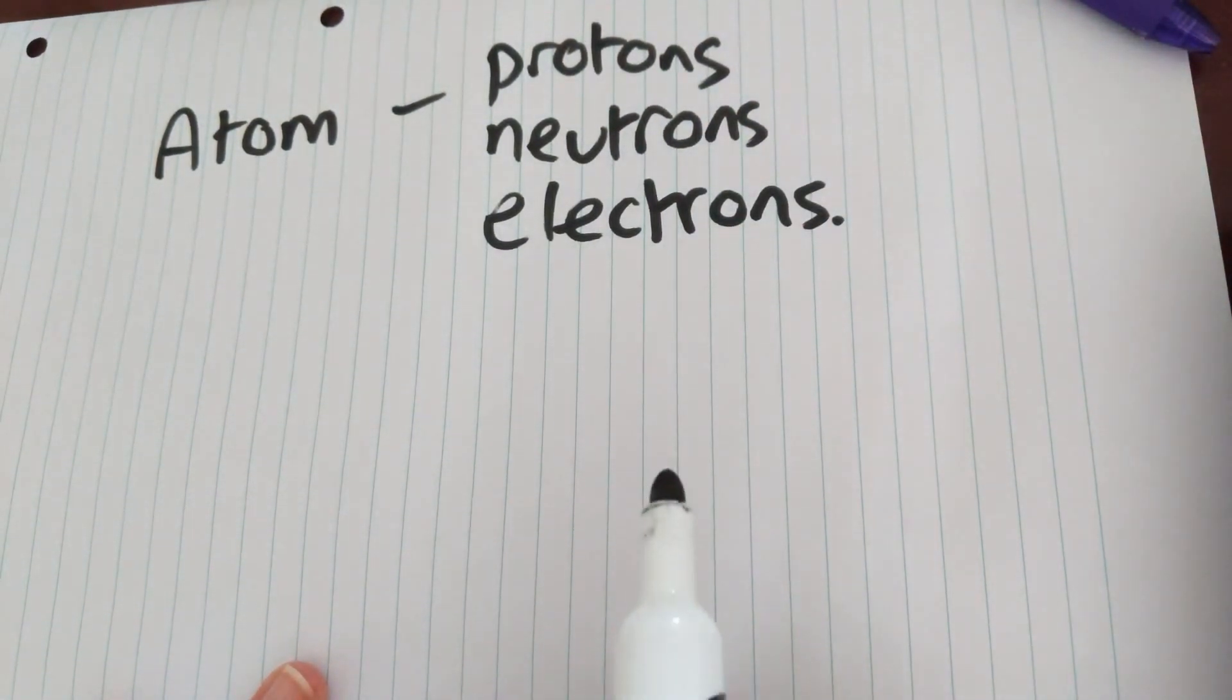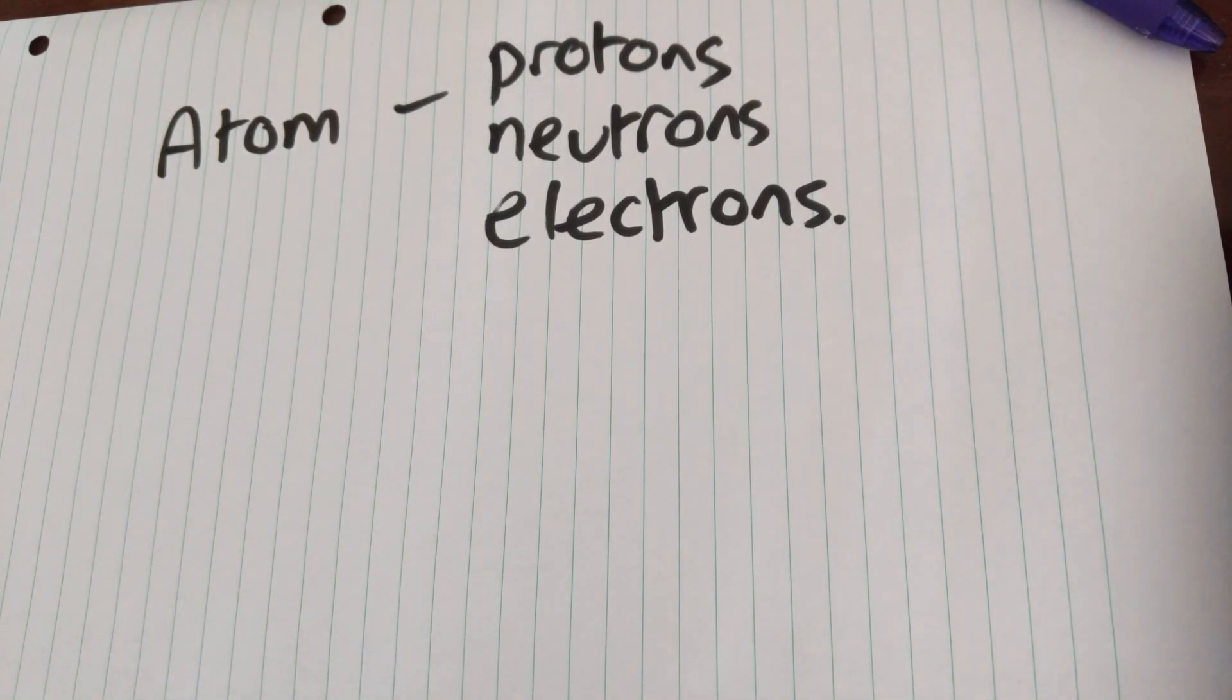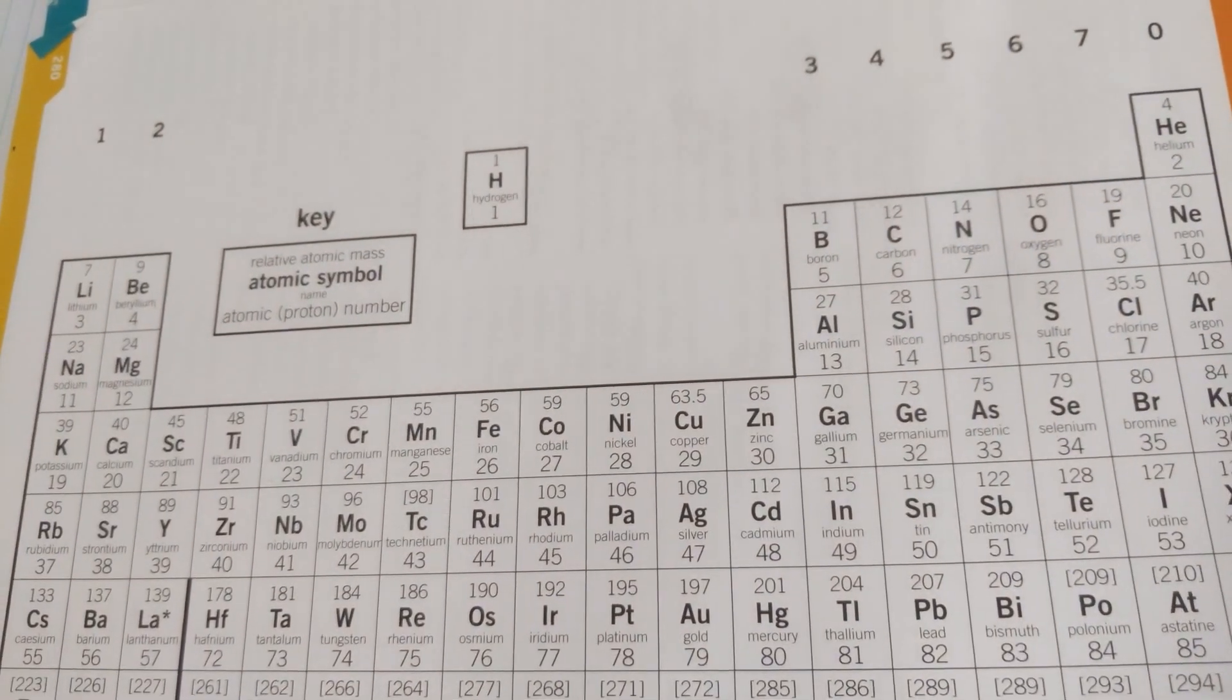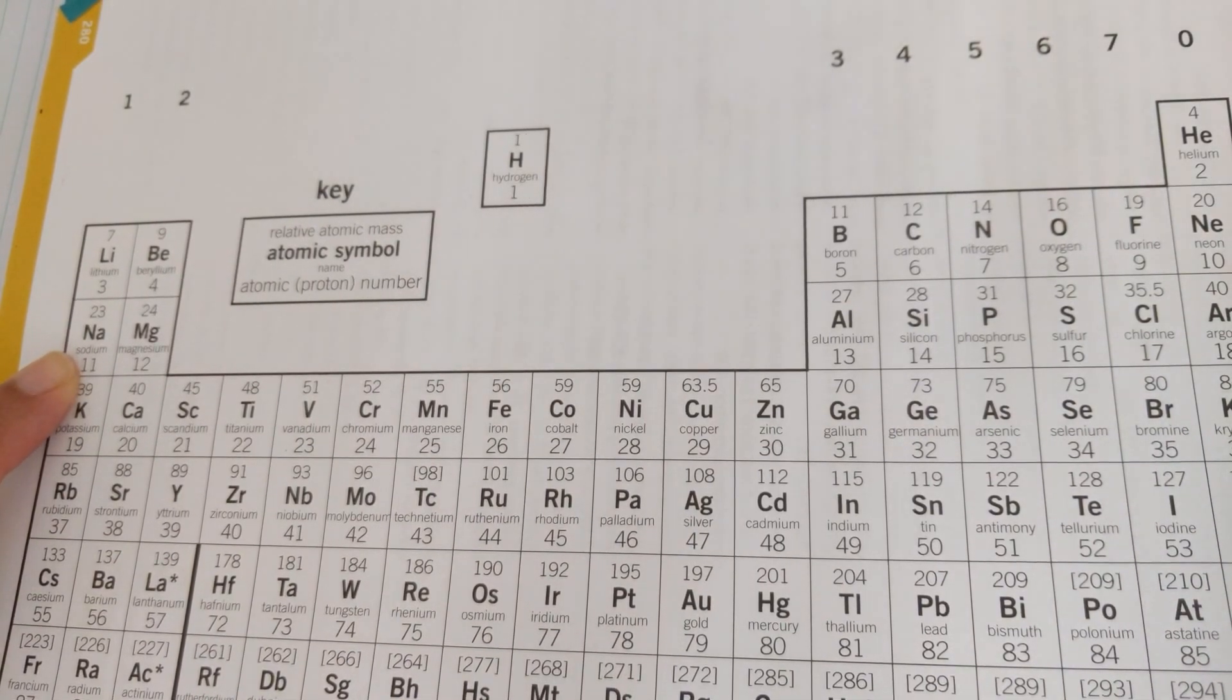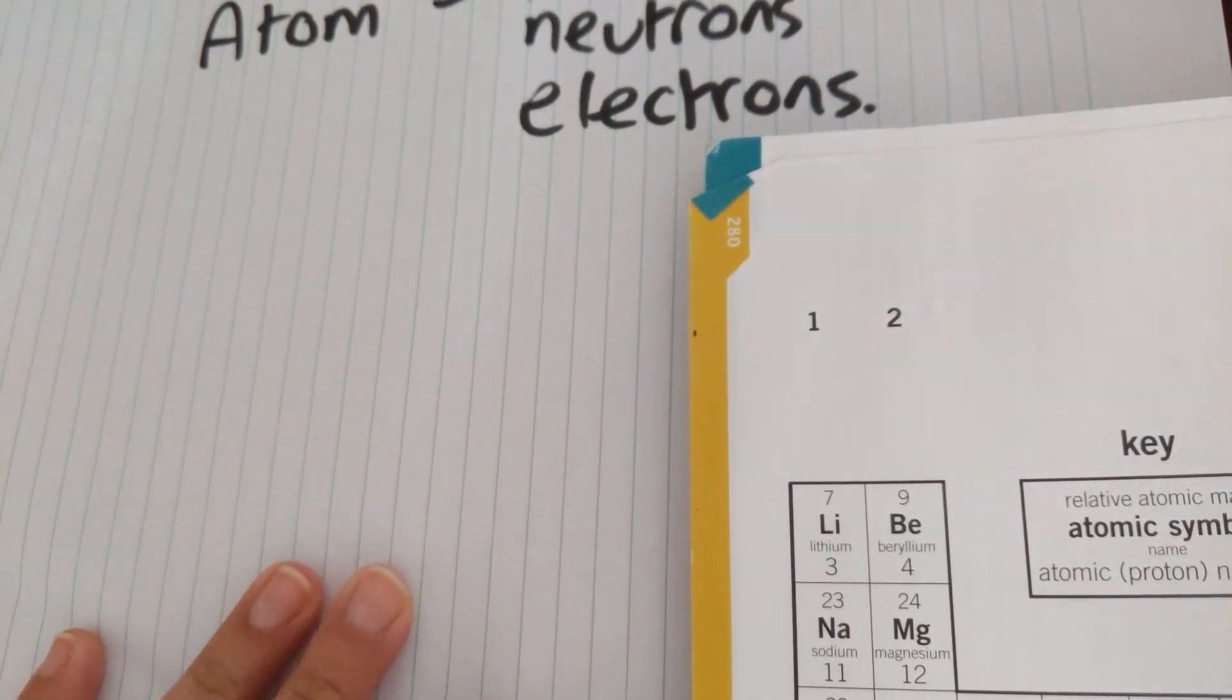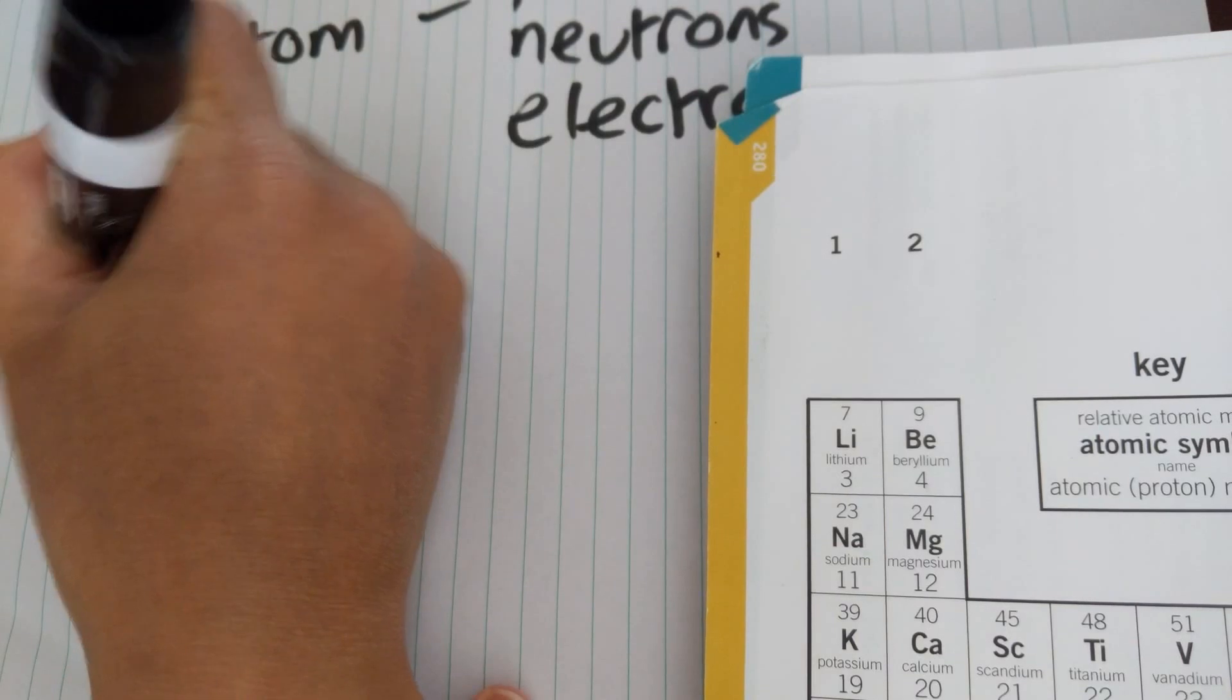To determine how many of each in the atom, we look at the periodic table. So I'll just pull that over here. And for today, I'm just going to get us to look at an atom of sodium. So if I keep that to the side here, we've got sodium, whose chemical symbol is Na.